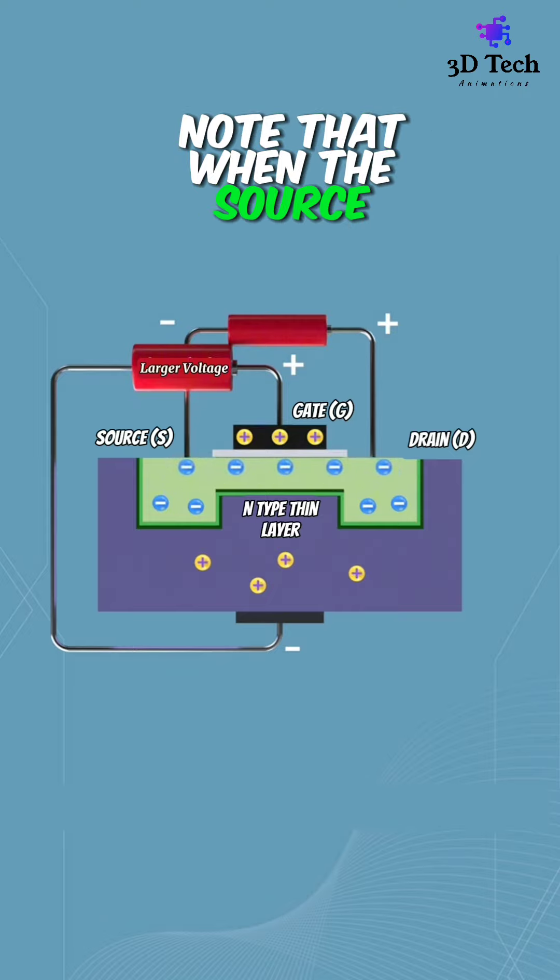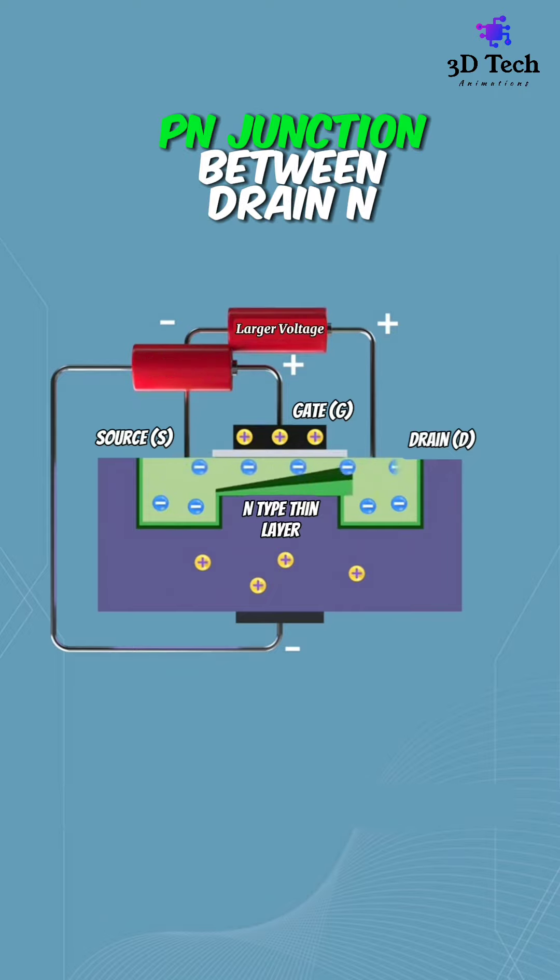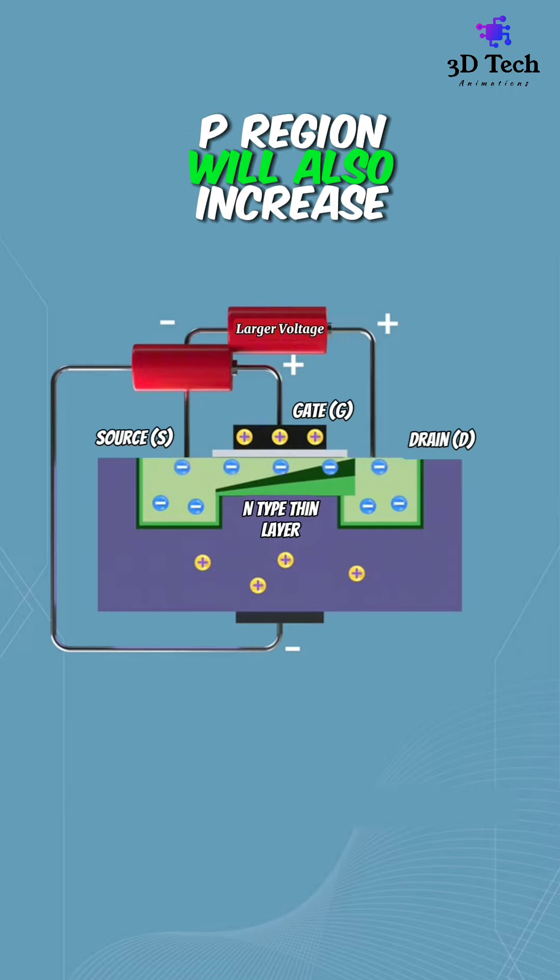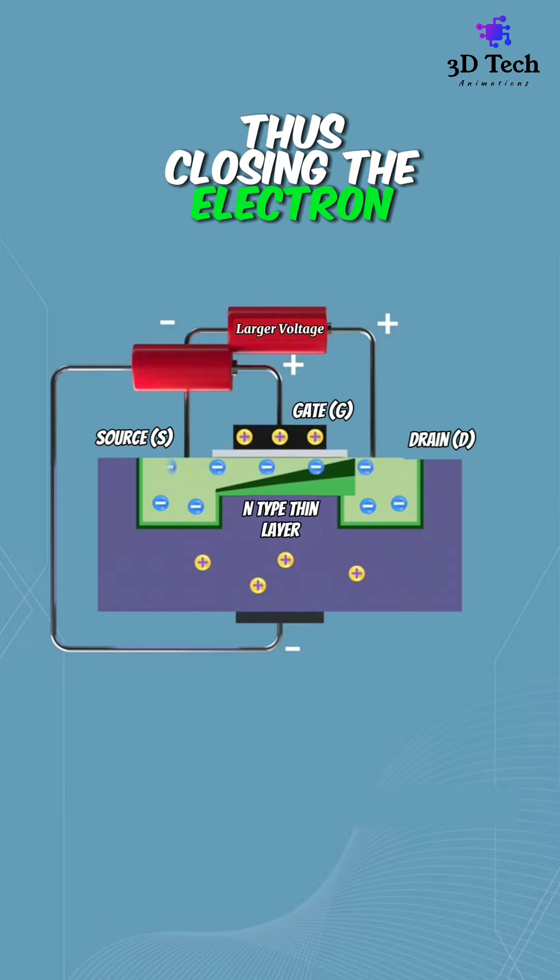Note that when the source-drain voltage increases, the P-N junction between the drain N-region and substrate P-region will also increase, thus closing the electron channel.